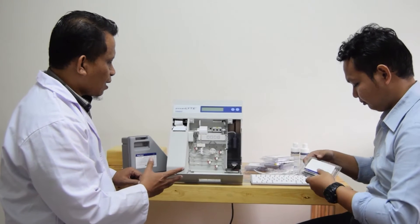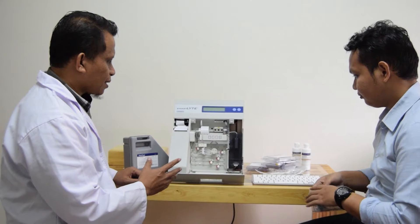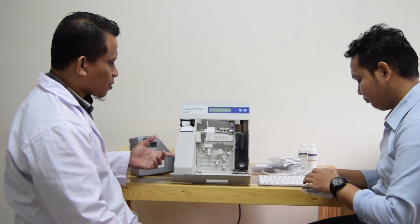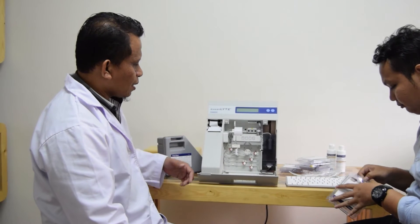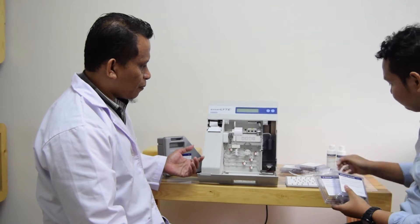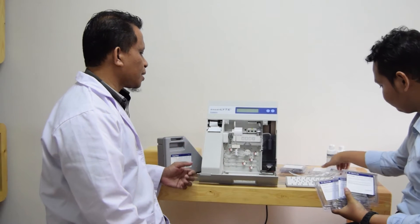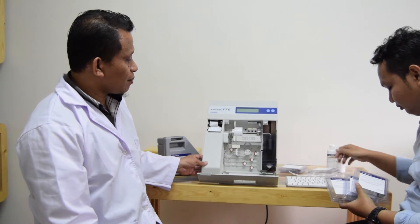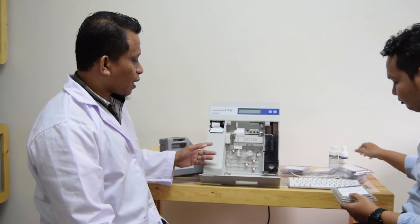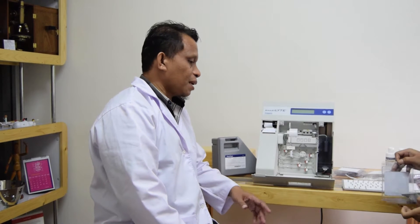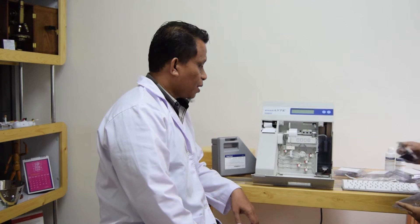Sekarang, Mas Fais, tolong bantu saya untuk membuka box-box elektroda yang ada di situ. Kita akan coba memulai dengan menginstalasi semua elektroda yang ada pada alat ini. Jadi, di situ ada beberapa box. Ada Na, Natrium, Kalium, Ref. Ref ada dua macam. Ada dua bagian. Ada housing dan elektrodanya.